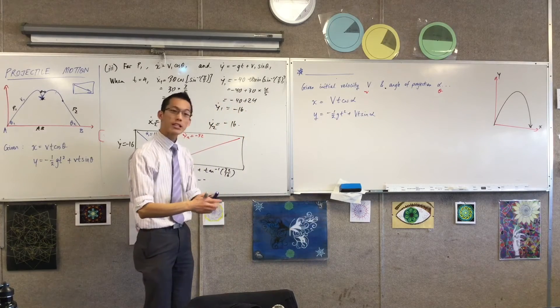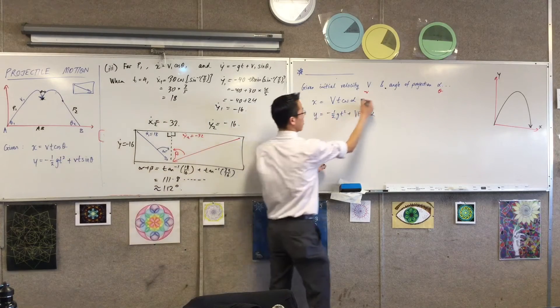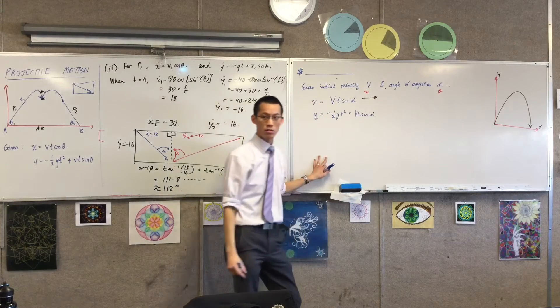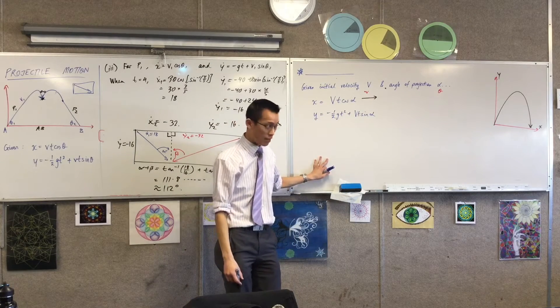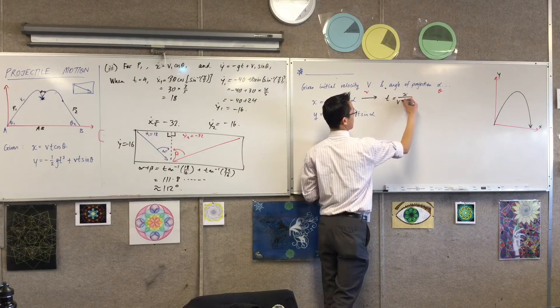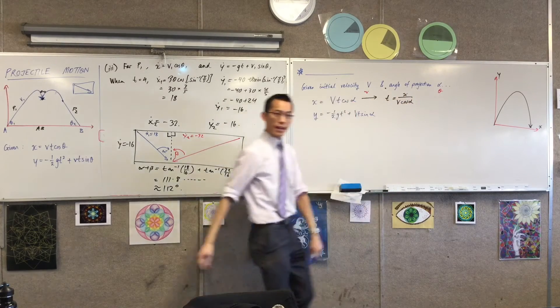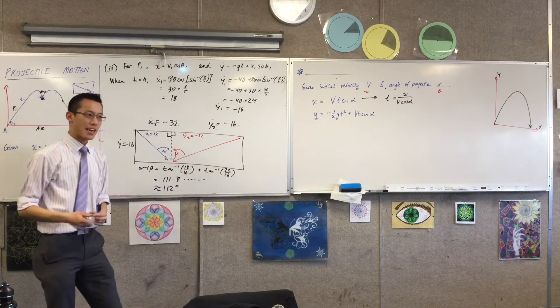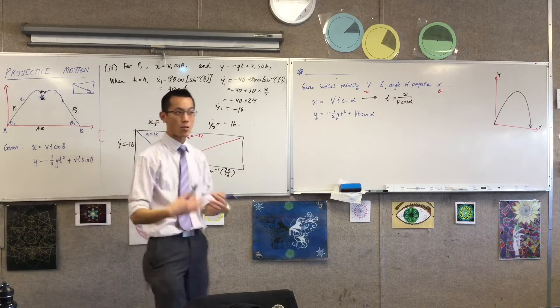Clearly the first one. So all I need to do, I just need to make t the subject, which means on both sides I'm going to divide through by v cos alpha. So that'll give me this. Okay, now given that, all I have to do is take that, substitute it into y, and see what happens.